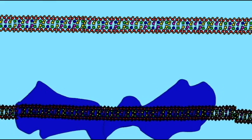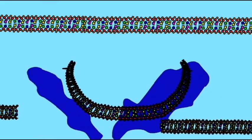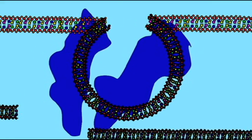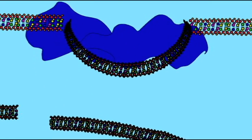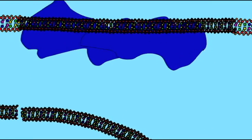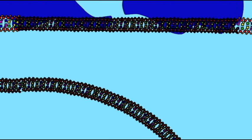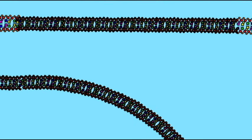Some transposons are autonomous because they code for all of the proteins needed for their transfer. Others are classified as non-autonomous because they lack a complete set of proteins and rely on some or all of the proteins produced by other autonomous transposons.